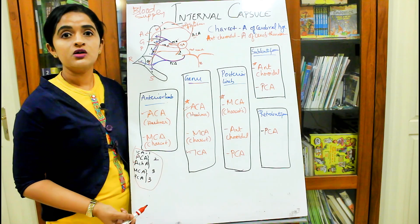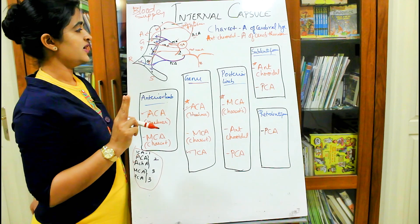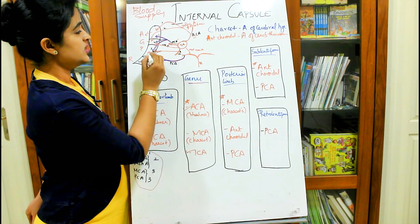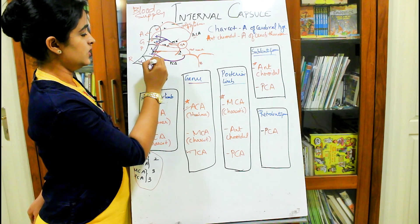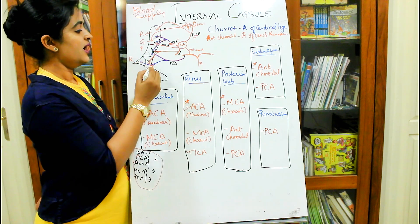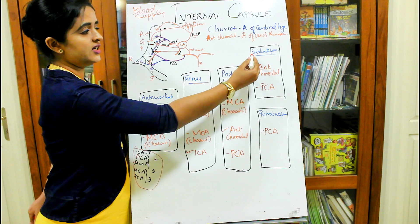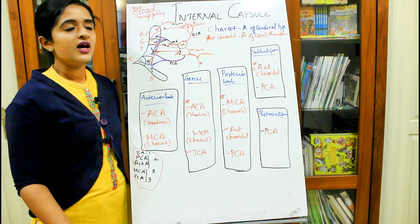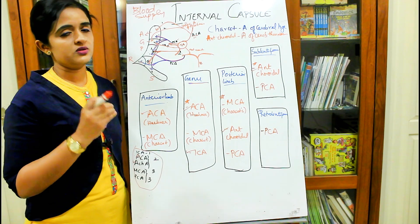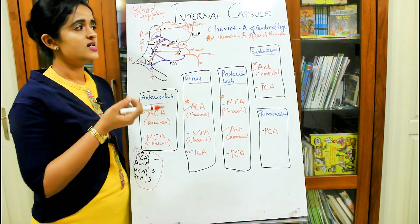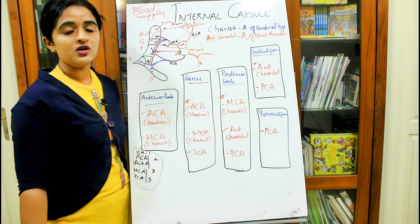Now the anterior choroidal artery — it gives two branches. The first branch goes to the posterior limb, and the second branch goes to the sublentiform part of the internal capsule. The importance of the anterior choroidal artery is that it has a long, slender subarachnoid course with a narrow lumen, making it prone to thrombosis. Hence it is also known as the artery of cerebral thrombosis.